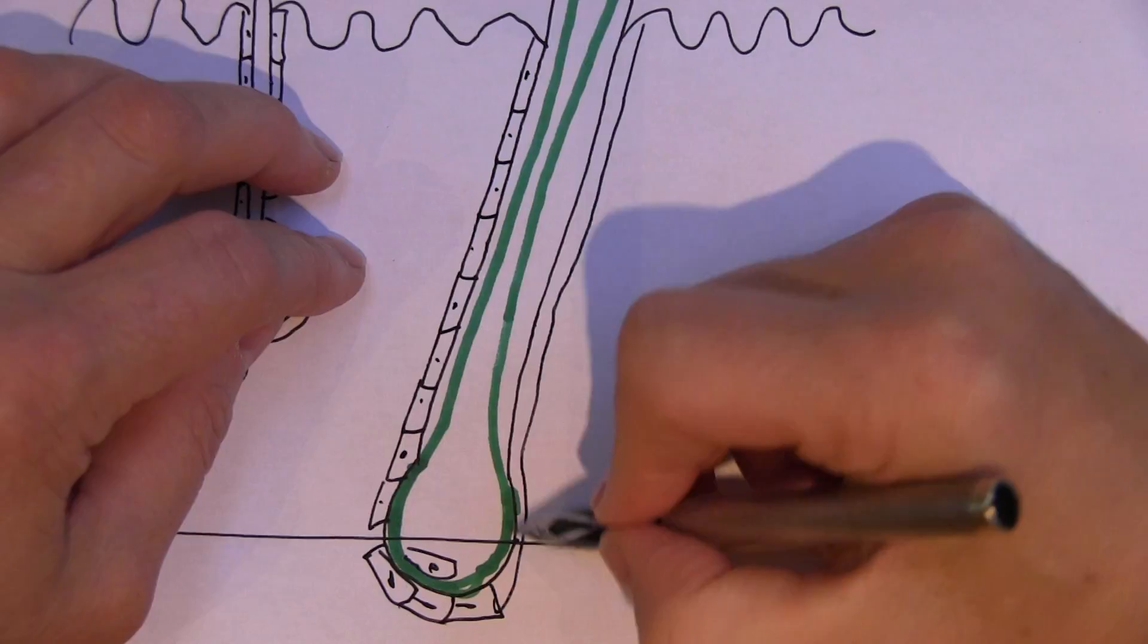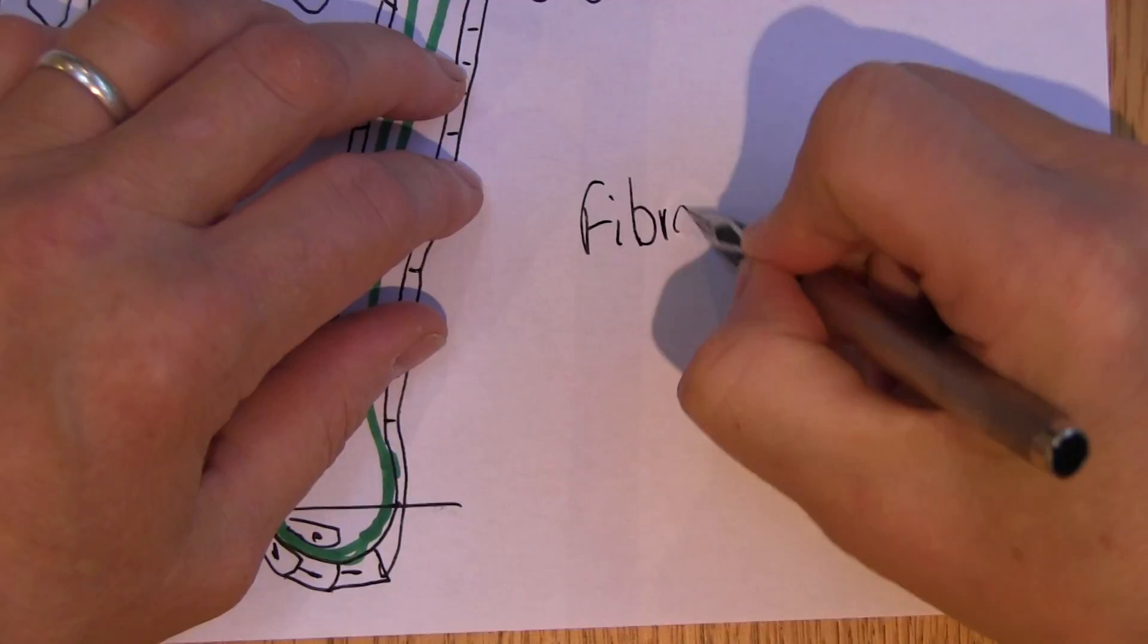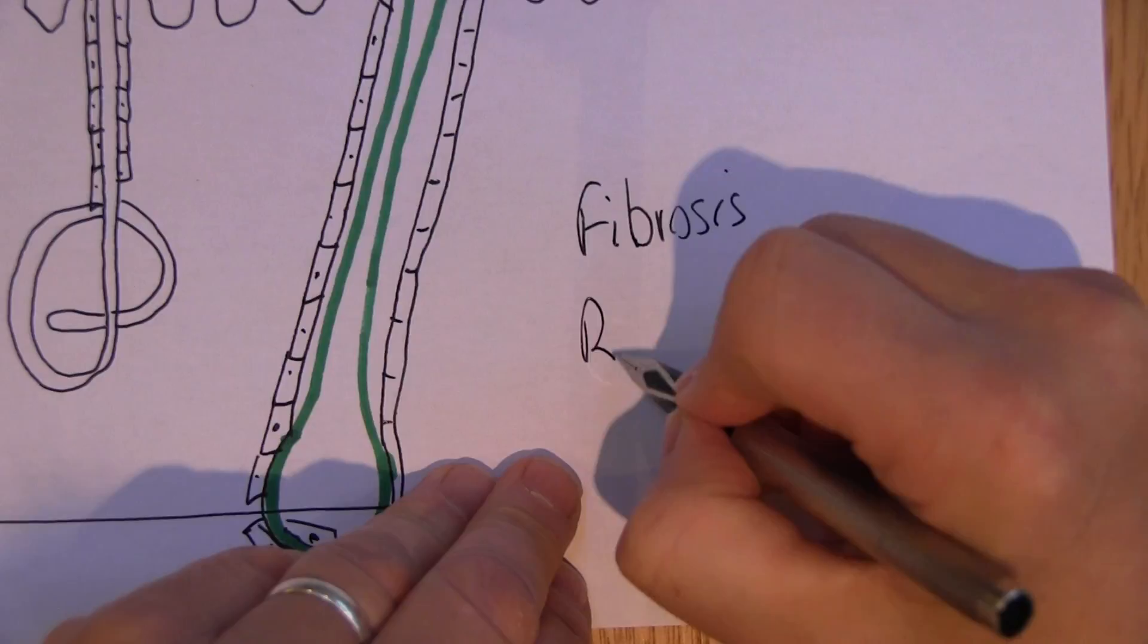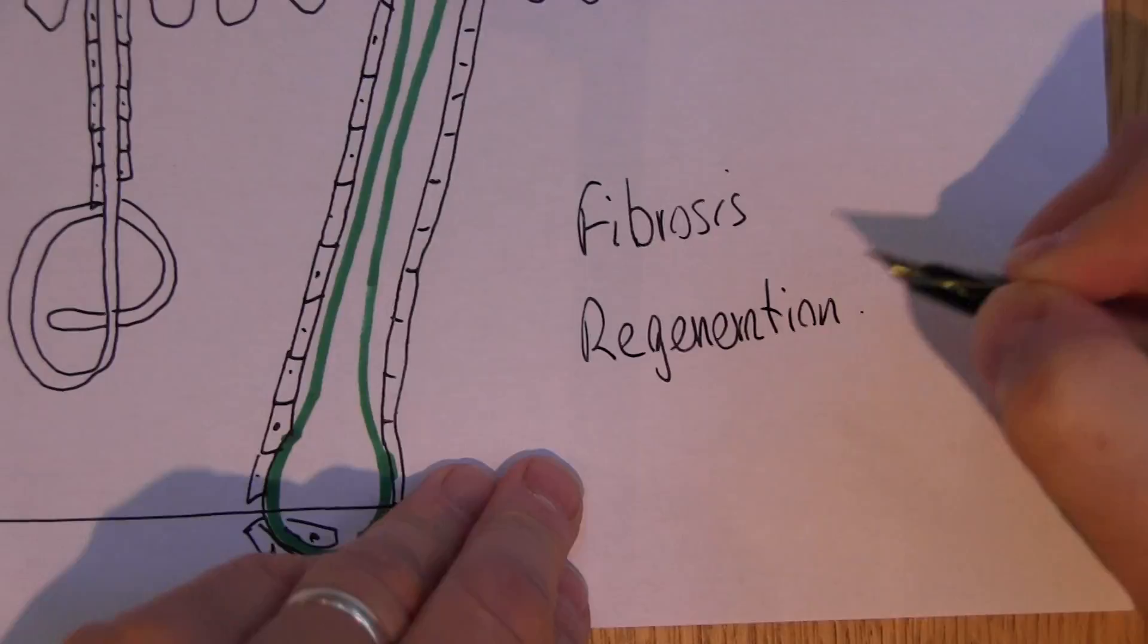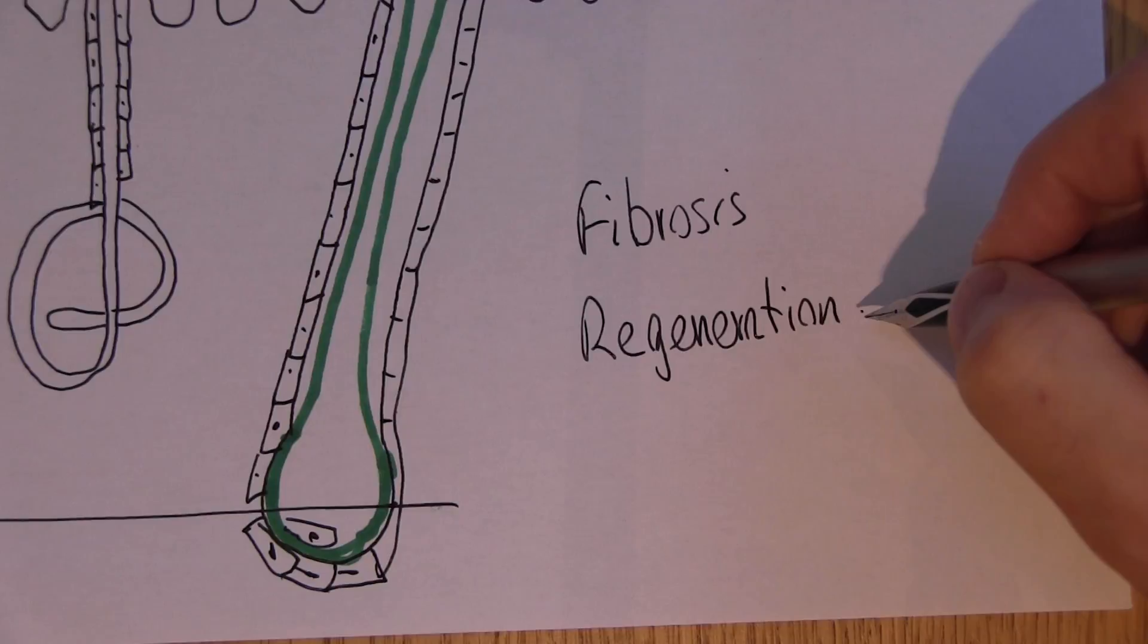Now if you think of wound healing as being in two parts, there can be fibrosis. Fibrosis. Or there can be this other term, regeneration. Regeneration. We can get regeneration of the tissues. Regeneration. Now fibrosis leads to scar tissue. Regeneration is a kind of new for old type policy. And cells can only reproduce themselves by this process of mitosis. Simple cell division, regeneration.